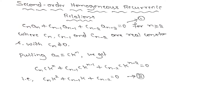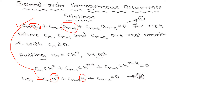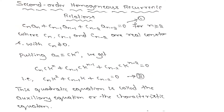When solving problems given this type of relation, first we need to write it in quadratic form. We replace An by K squared, An minus 1 by K, and An minus 2 by 1. So we get a quadratic equation from the given second order homogeneous recurrence relation. This quadratic equation is called the auxiliary equation or the characteristic equation.